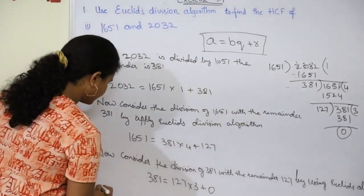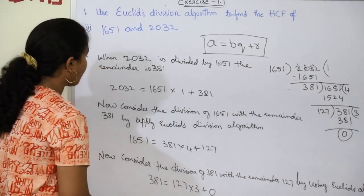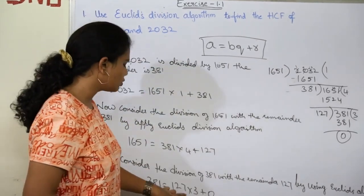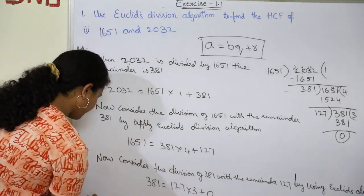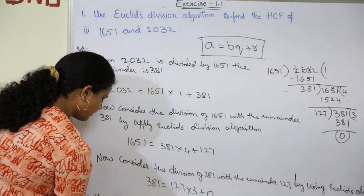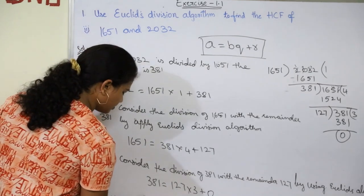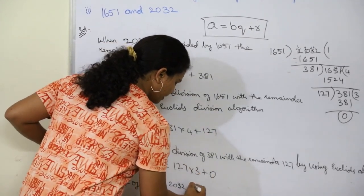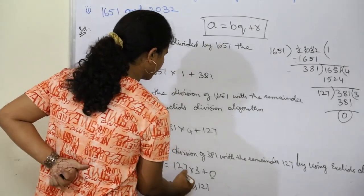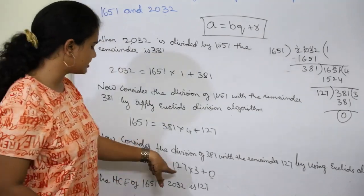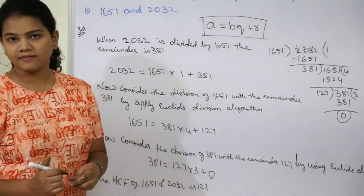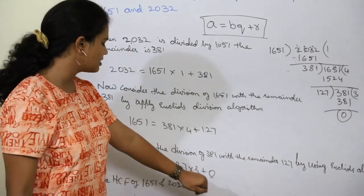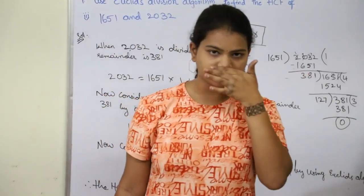Let's conclude: the HCF of 1651 and 2032 will be 127. Therefore the HCF of 1651 and 2032 is 127, because we got the remainder as 0 and the B value is 127. The HCF is the numeral which is in the value of B. So the HCF of 1651 and 2032 is 127, by using Euclid's division algorithm. Thank you.